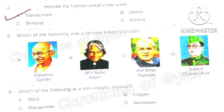Question 5: Which of the following was a famous Indian scientist? The correct answer is option B: APJ Abdul Kalam.